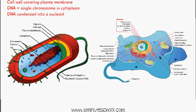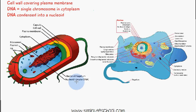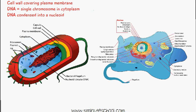Here we have an image of a prokaryotic cell. We can see it's enclosed in a capsule, with a cell wall and then the plasma membrane. There is a bacterial flagellum, and the nucleoid — which is the chromosomes condensed into a region of the cytoplasm. There's also a plasmid, which is a region containing extra DNA for the cell, separate from the nucleoid.